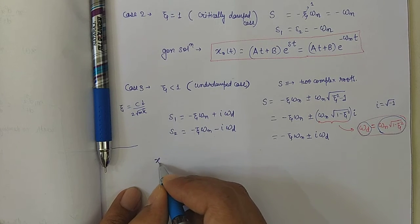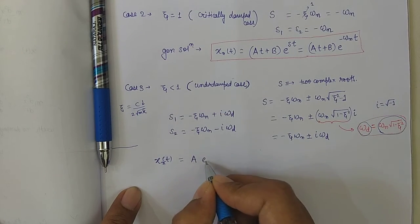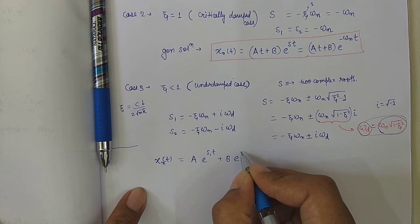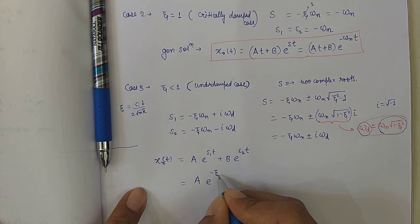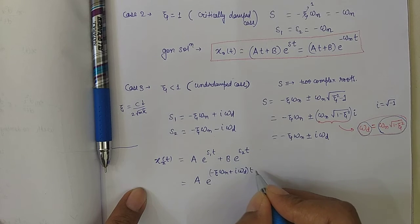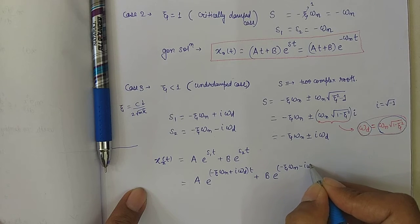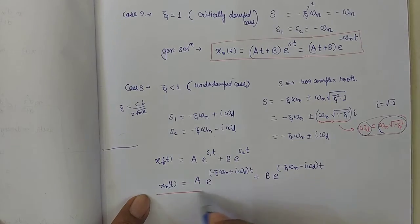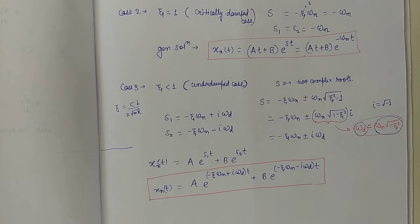The general solution for the underdamped case is x(t) = A e^(s₁t) + B e^(s₂t), which expands to x(t) = A e^((–ζωn + iωd)t) + B e^((–ζωn – iωd)t).